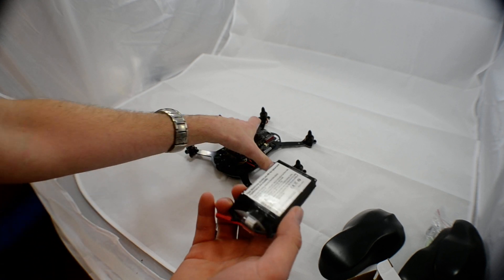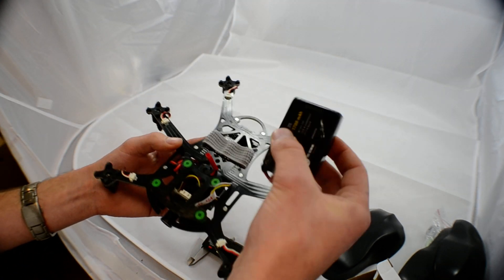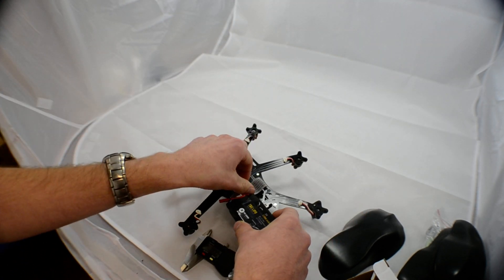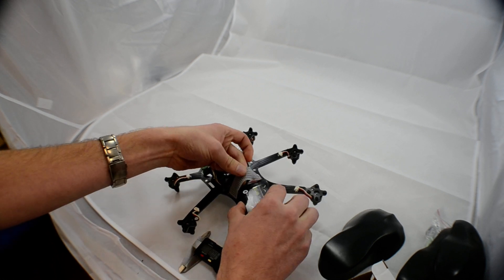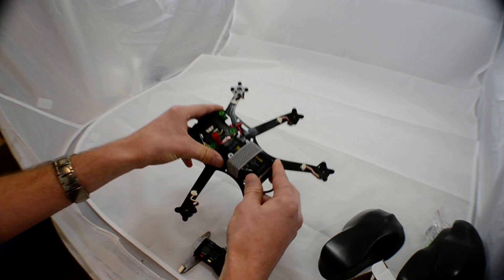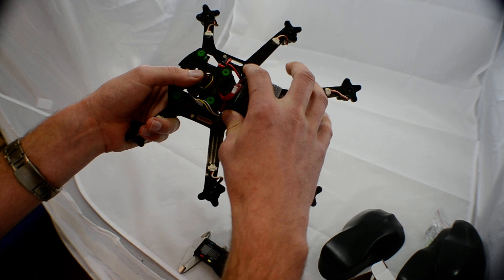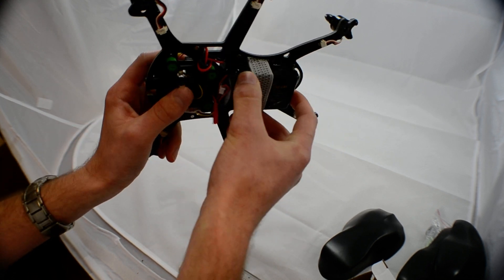So basically this just sits in the bottom using the elastic band here which is provided. Sits in there. XT60 connector on top. All plugs in. All good to go.